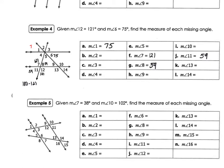The problem with this diagram is there's an extra line in there that's throwing everyone off — it looks funky. If you can visually take out that extra line and just focus on the parallel lines and one transversal at a time, it gets easier. So now we're looking at just the parallel lines with this transversal. Angle one is 75, so the alternate exterior angle down at the bottom — angle 14 — would also be 75.